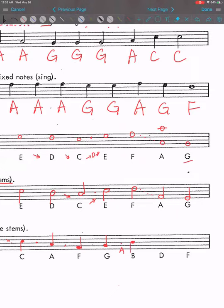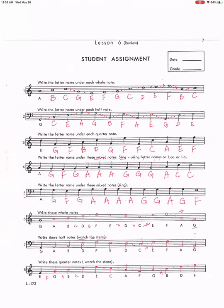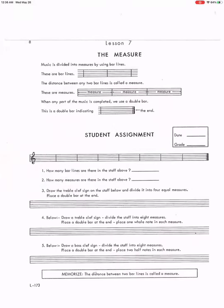And then the next one is D. So B, C, D. Stem goes down because the notes are high. Next one is F. So D, E, F. Stem goes down. Great job. We'll talk about lesson seven in our next video. Thank you.